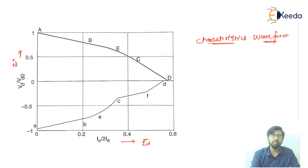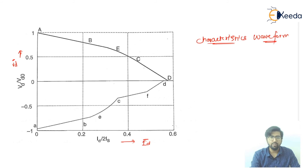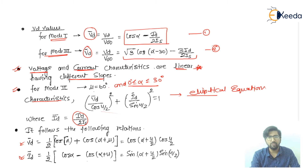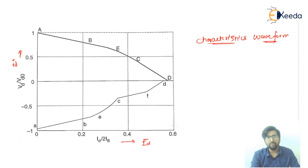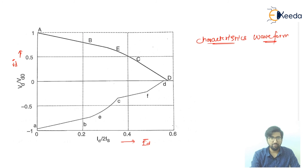The characteristic waveform is drawn with key points labeled a, b, c, d, and e. By substituting values into the equations, you can obtain the complete characteristic. Remember: modes 1 and 3 have linear characteristics with different slopes, while mode 2 has an elliptical characteristic.